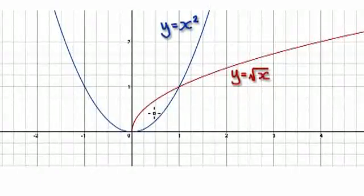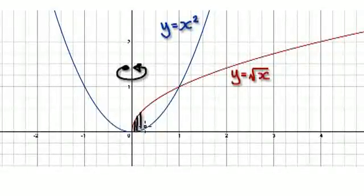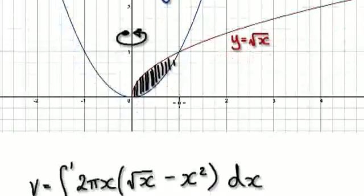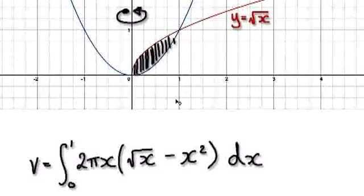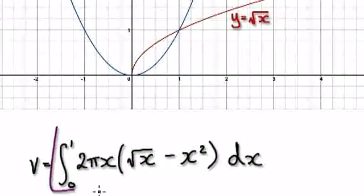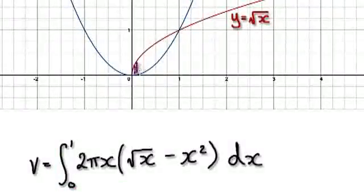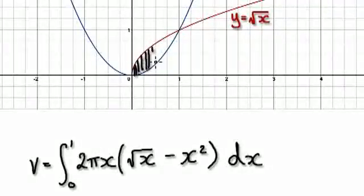So let's do the y-axis first. Let's sum up all the cylinders. There are lots of ways of doing it. Let's just sum up all the cylinders — so summing up all the cylinders would be us doing this. Remember, you're doing it from 0, so you're summing up all the cylinders here.